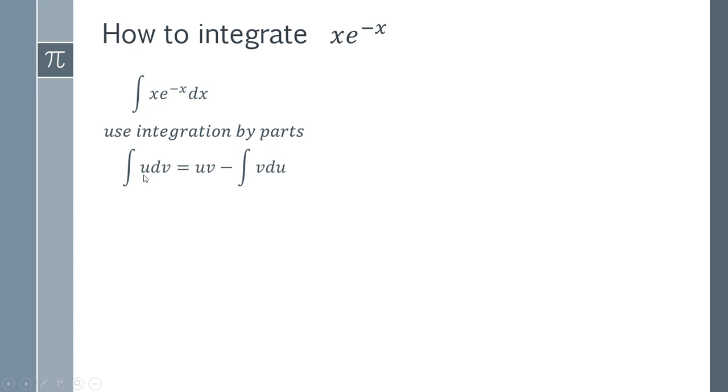One of the functions is going to be called u so we have to choose one of these to be u and another function is going to be dv, and you have to choose carefully. When you're choosing you're thinking about how can you make this integral as easy as possible. You'll notice you've got u here and you've got du here, and if you want to turn u into du you're going to have to differentiate.